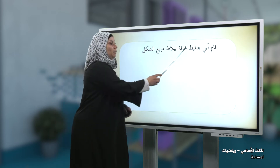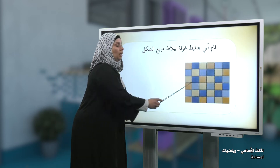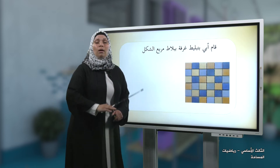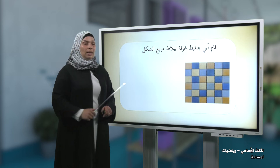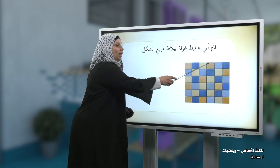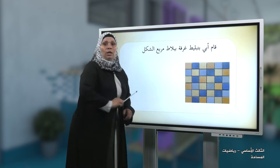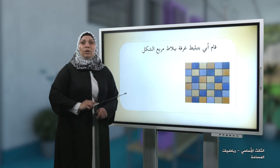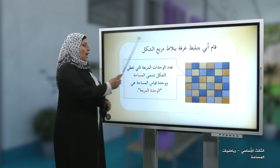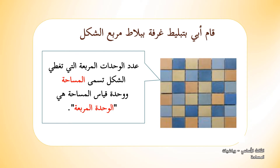قام أبي بتبليط غرفة ببلاط مربع الشكل كما في الشكل. هذه تمثل أرض غرفة، وقام والدي بتبليطها ببلاط مربع الشكل. إذا قمنا بعد هذه البلاطات سنحصل على ما يسمى مساحة أرض الغرفة. عدد الوحدات المربعة التي تغطي الشكل يسمى مساحة، ووحدة قياس المساحة هي الوحدة المربعة.